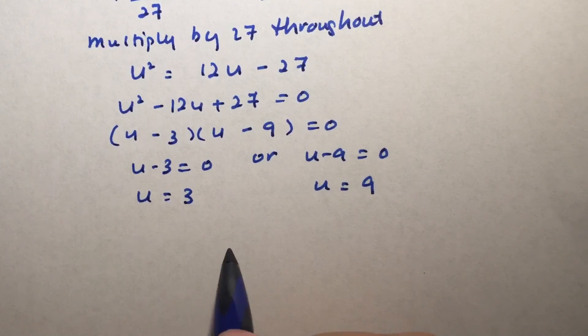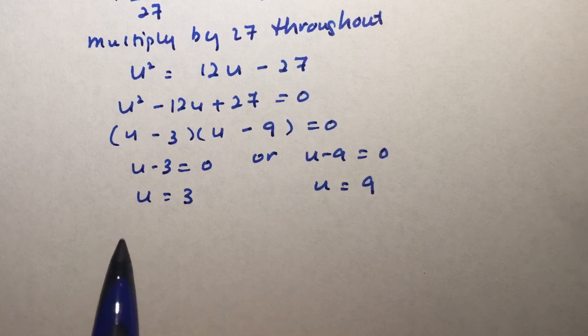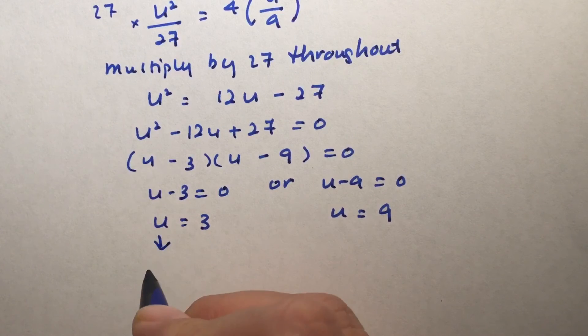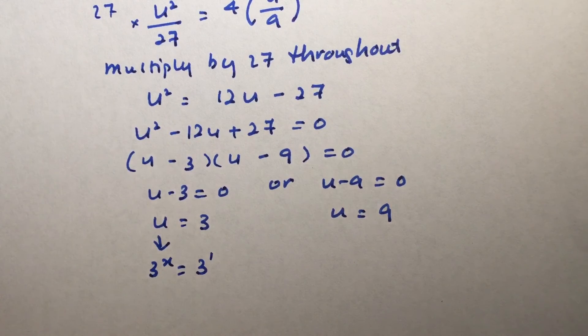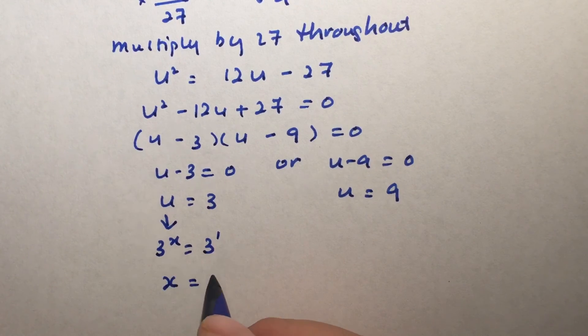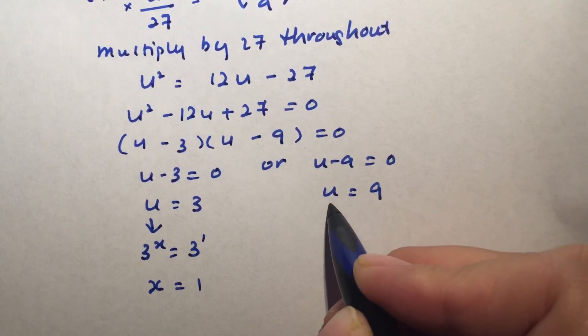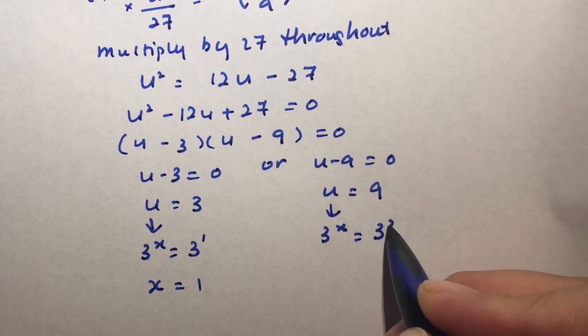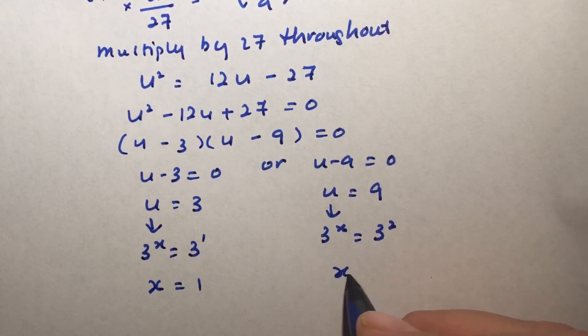Now remember, just like the previous example, u is not our solution. We actually want to solve for x. So u was used to replace 3 to the power of x. So again, we are going to replace it back. And 3 is the same as 3 to the power of 1, so again, comparing the exponents, we have x is equals to 1. Now what about this case here? This is again 3 to the power of x, and 9 can be written as 3 squared. So we can have it as comparing exponents again. x equals to 2.